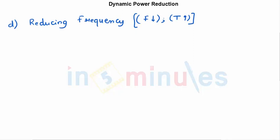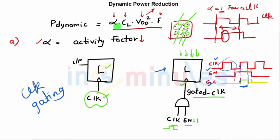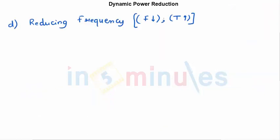The fourth parameter is reducing frequency. Since time period is inversely proportional to frequency, reducing frequency increases the time period and delay, making the circuit slower. However, in circuits more concerned with throughput — such as digital signal processing systems or pipeline systems — the rate of output matters more than delay. For such systems, reducing frequency can save power while still giving better performance without losing too much.